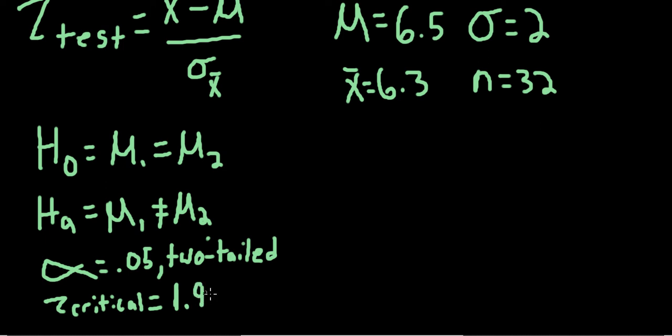That absolute value of 1.96 cuts off 2.5% of the curve on each side of the normal distribution.